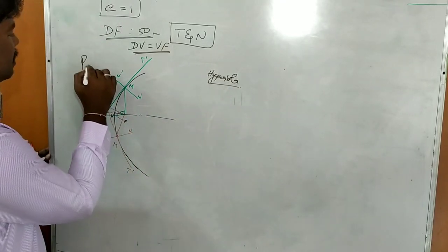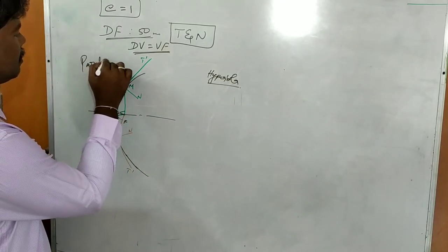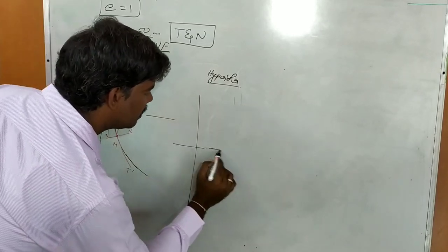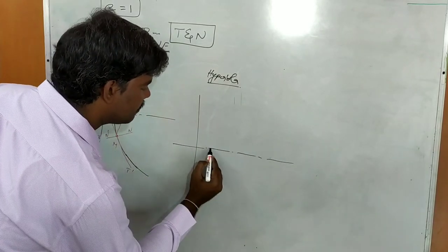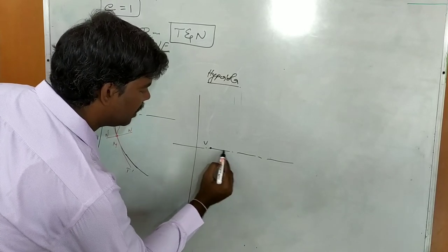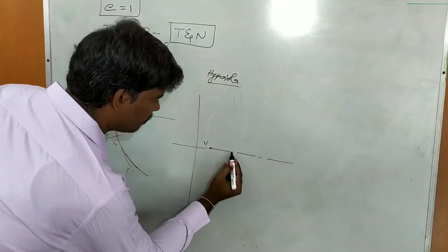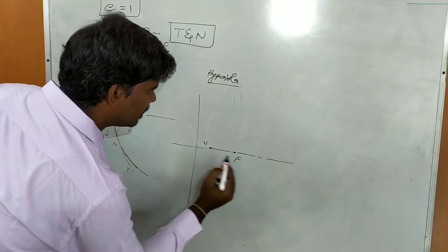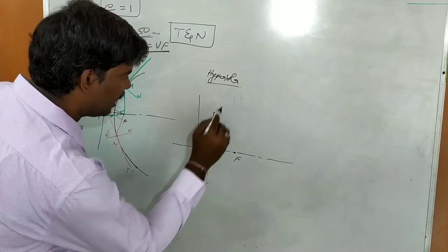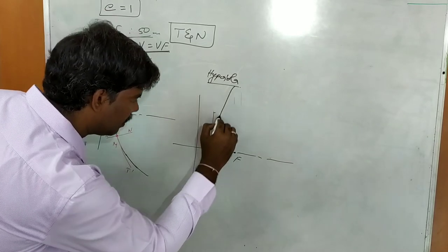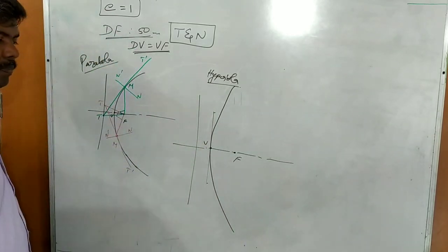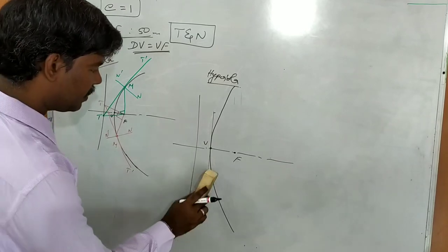For hyperbola: the same setup — directrix, axis, vertex V, and focus F. After completing the hyperbolic curve construction, the tangent and normal procedure is identical.